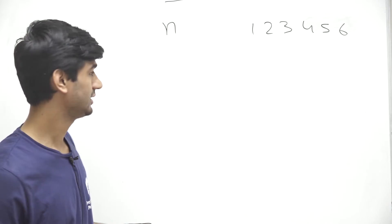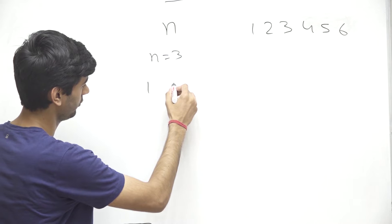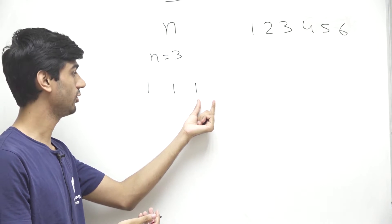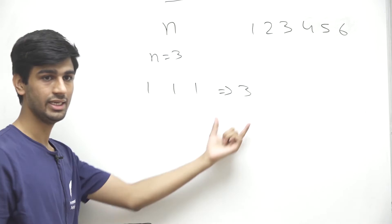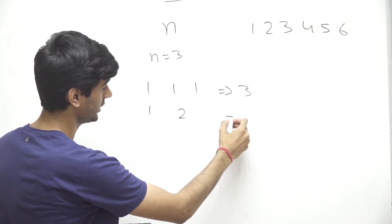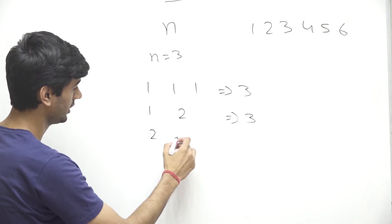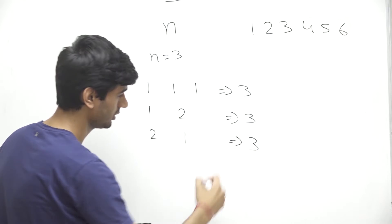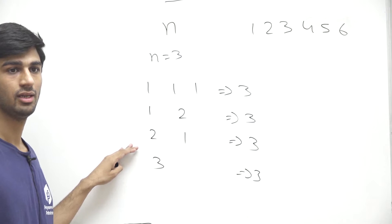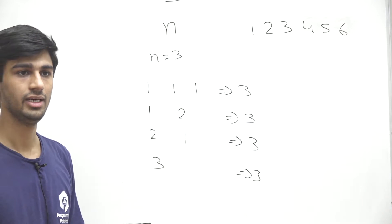They have also given an example. We are given n equals to 3 and the possible outcomes shown are: first, {1,1,1} — we get 1, 1, and 1 which adds up to 3. Second possibility: {1,2} — first row 1, second row 2, adds up to 3. Third: {2,1} — first row 2, second row 1, adds up to 3. Last possibility: we get 3 directly in the first row.